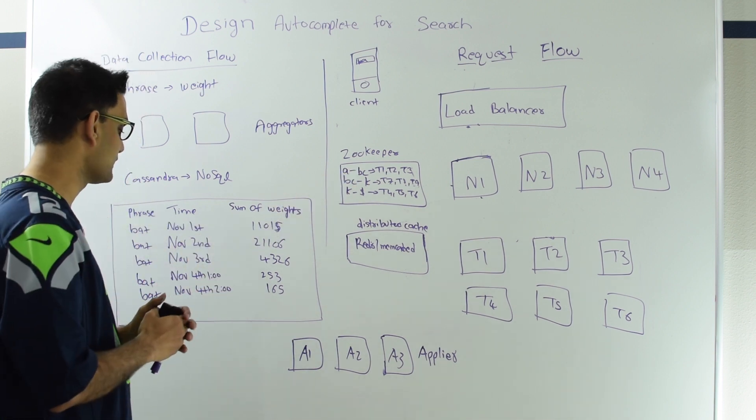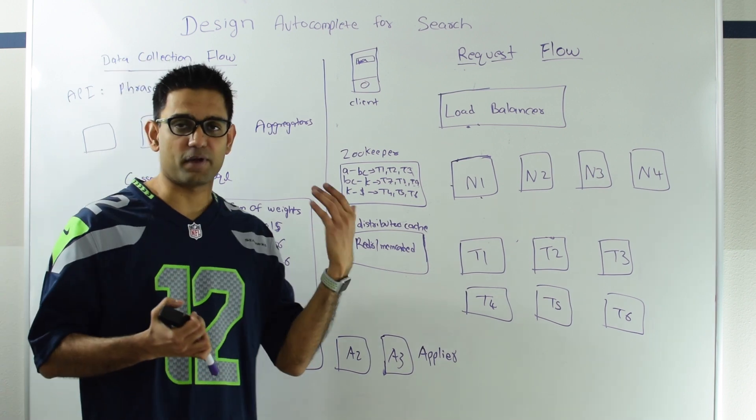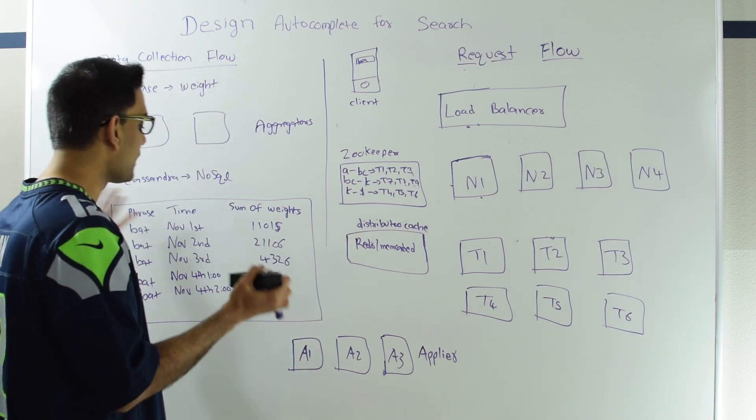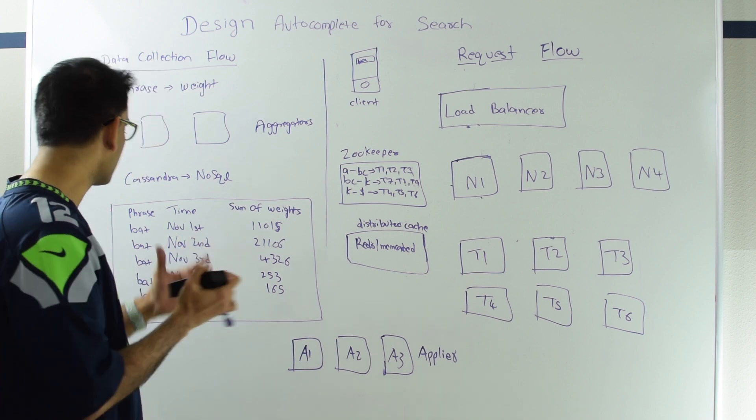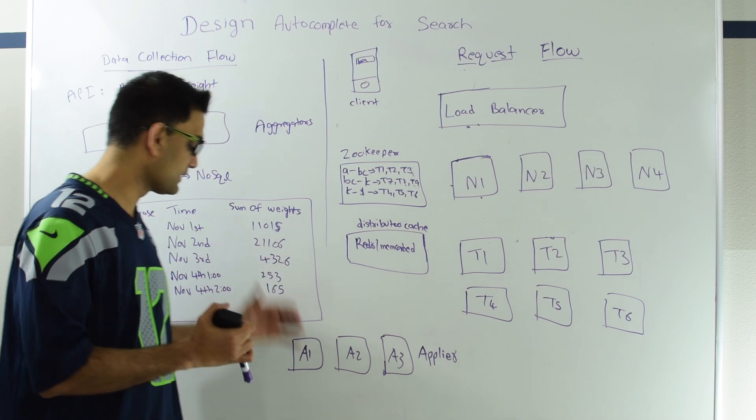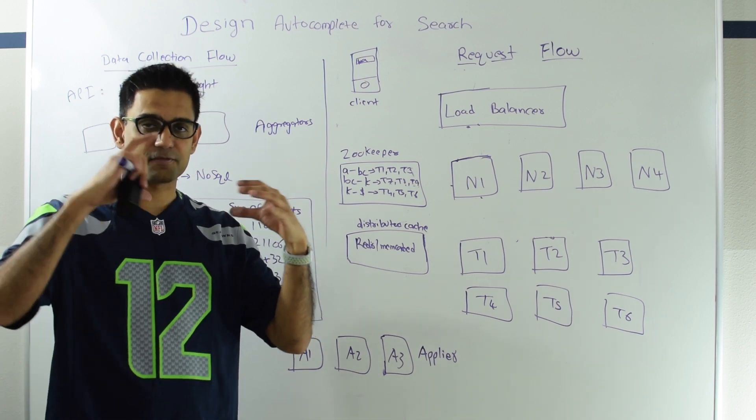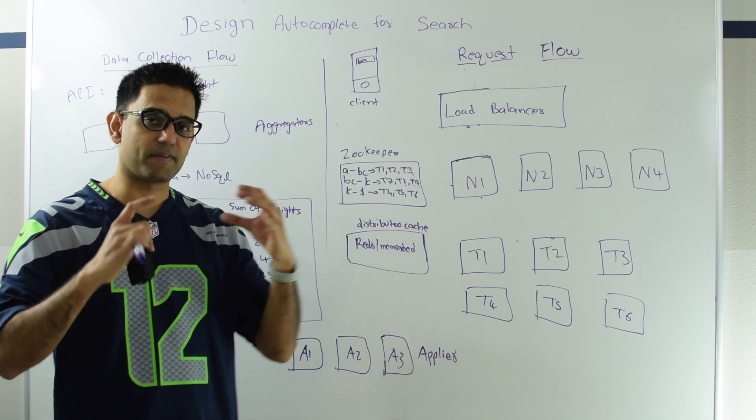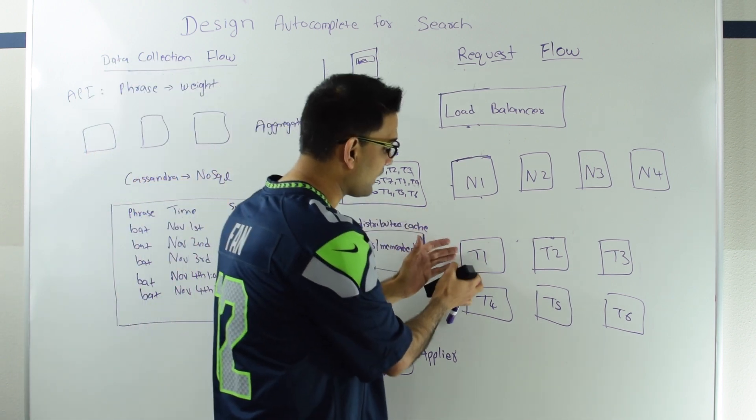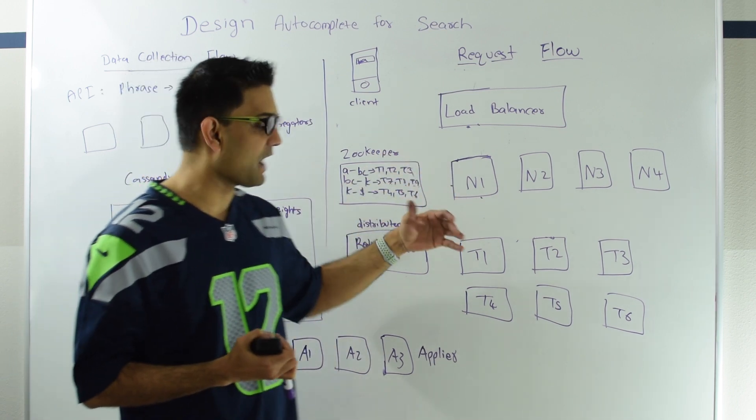He'll take all those phrases, and then based on some mathematical formula giving more weight to the current time versus old time, he will come up with the weights for all the phrases. Then he's going to build that trie internally in the applier, where every node will have the top K terms for that node, and then finally take that trie and dump that in T1, T2, and T3.